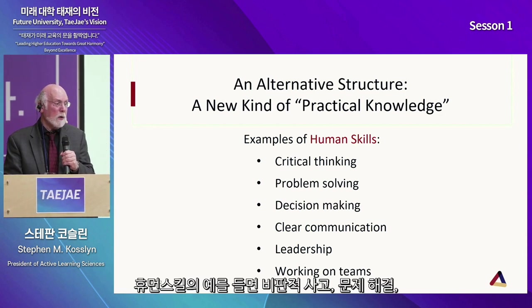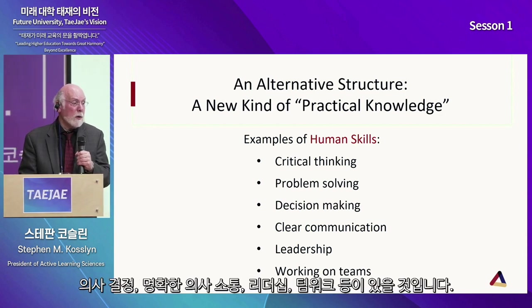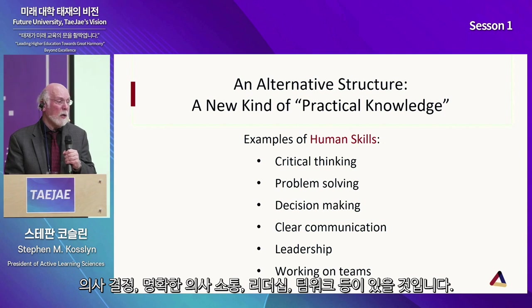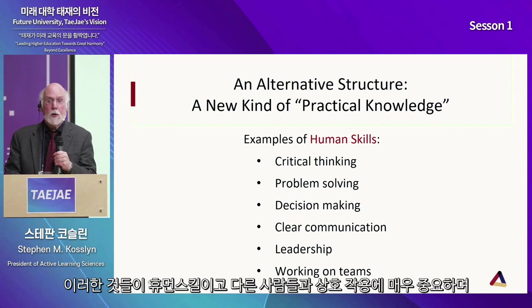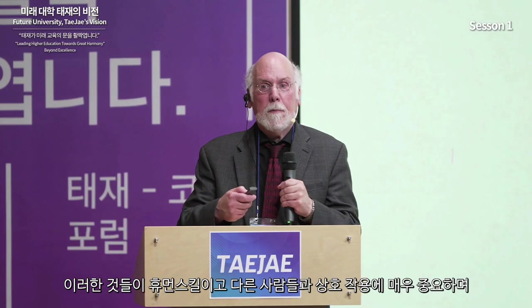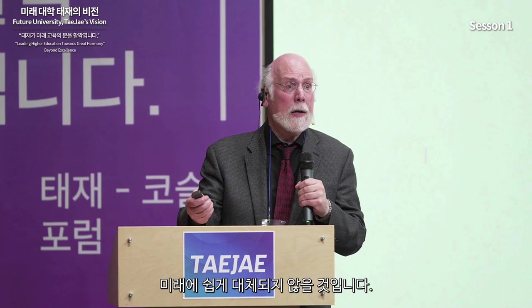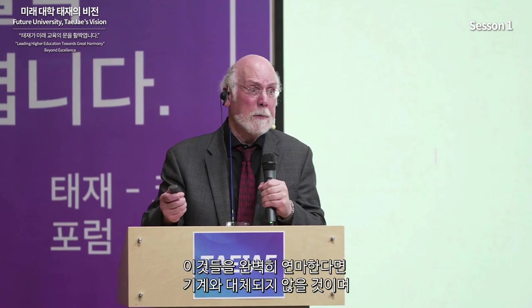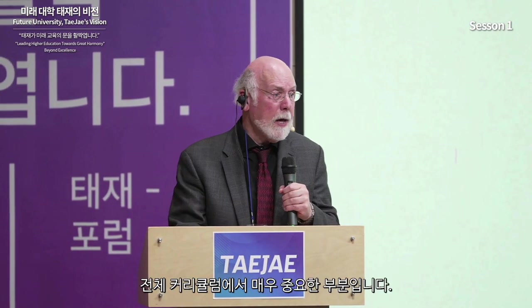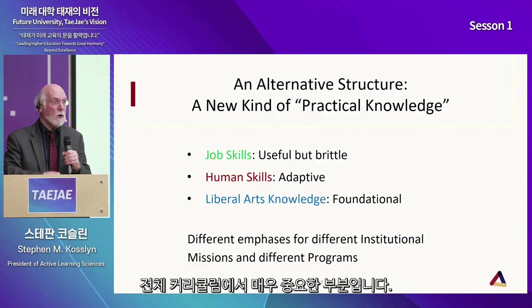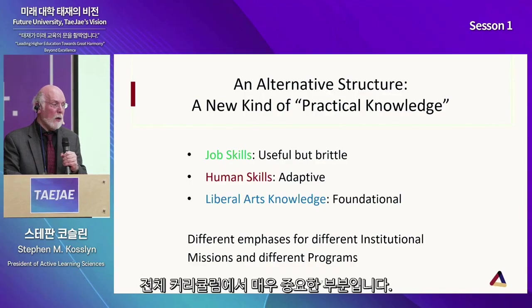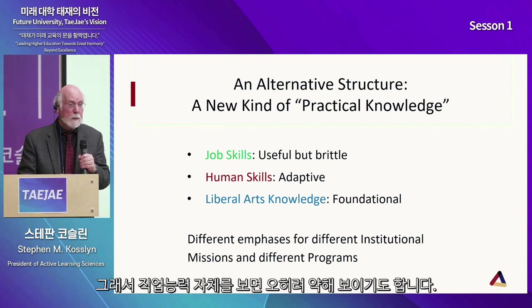Examples of human skills: critical thinking, problem-solving, decision-making, clear communication, leadership, working on teams. These are all human skills. They're important for interacting with other people. They will not be easily automated in the future. If you master them, you won't be replaced by a machine. And they are crucial for the entire curriculum.